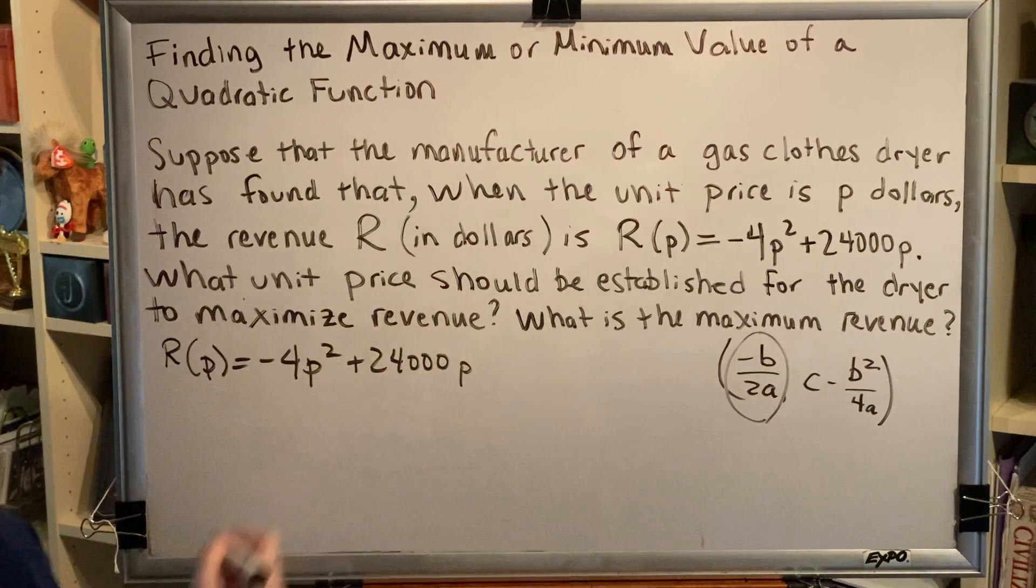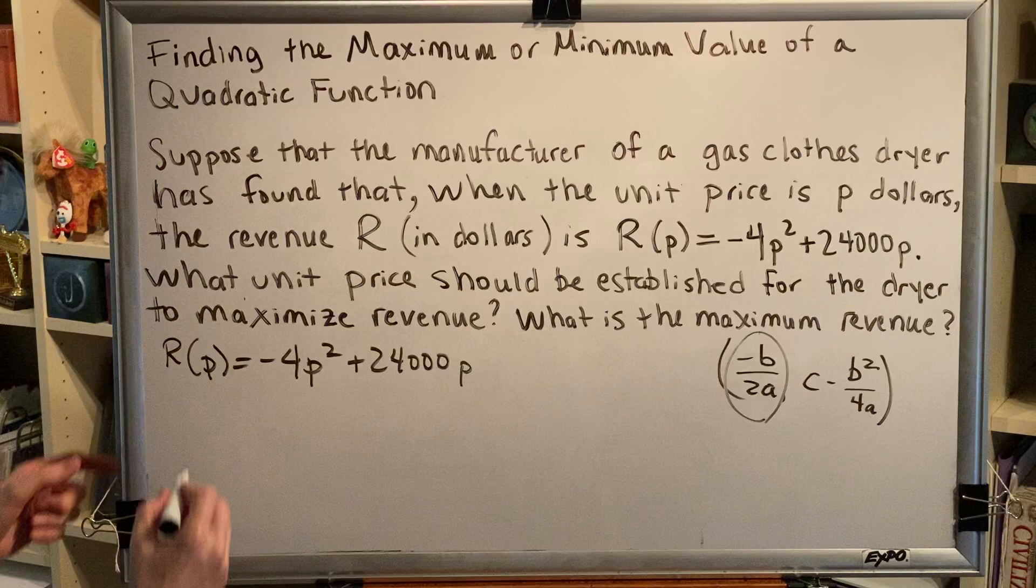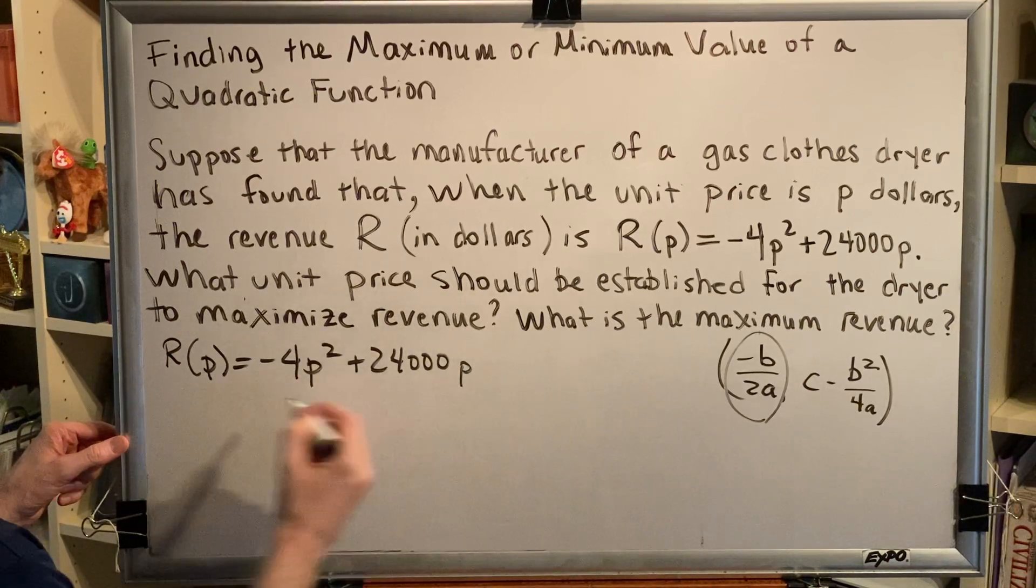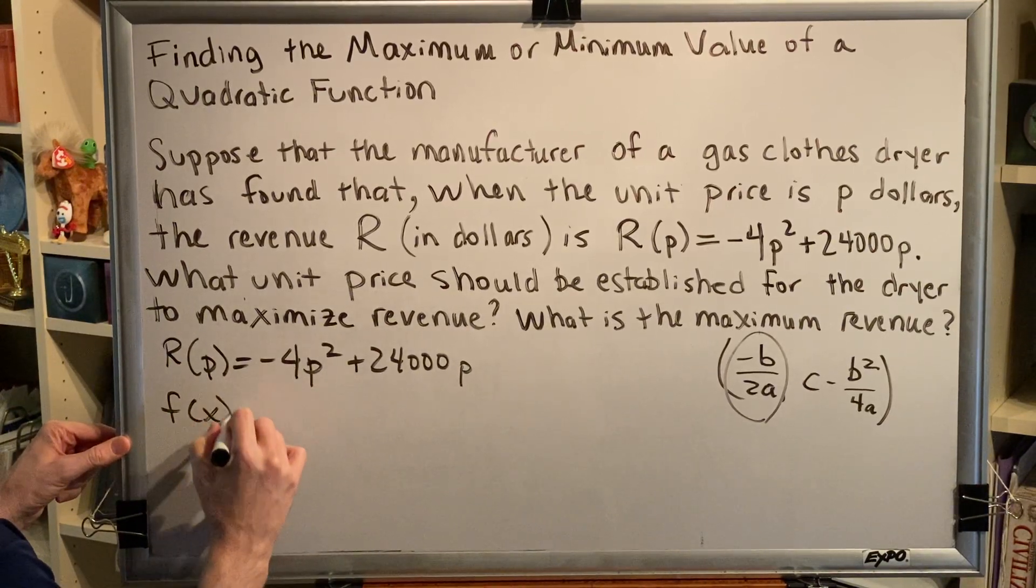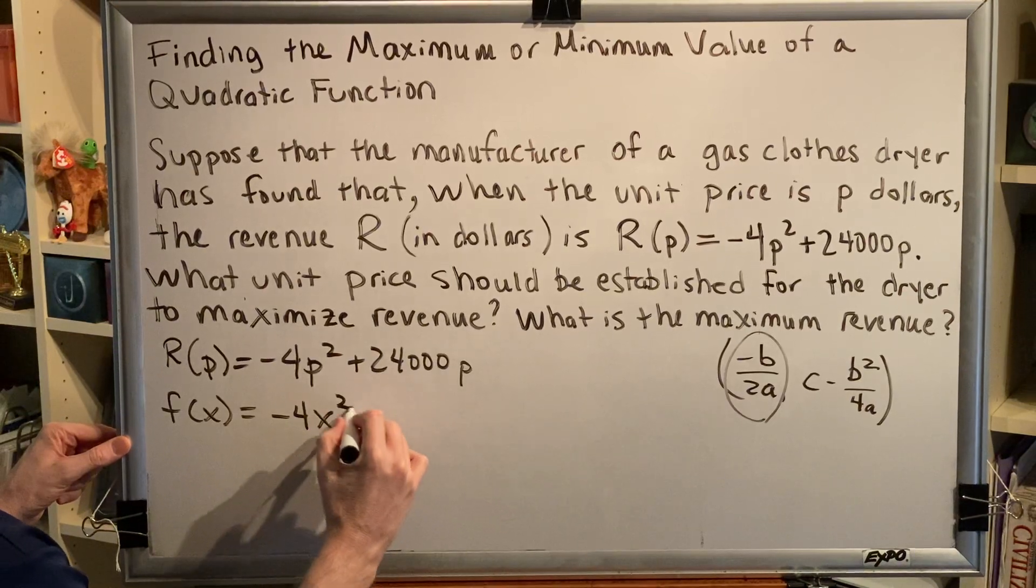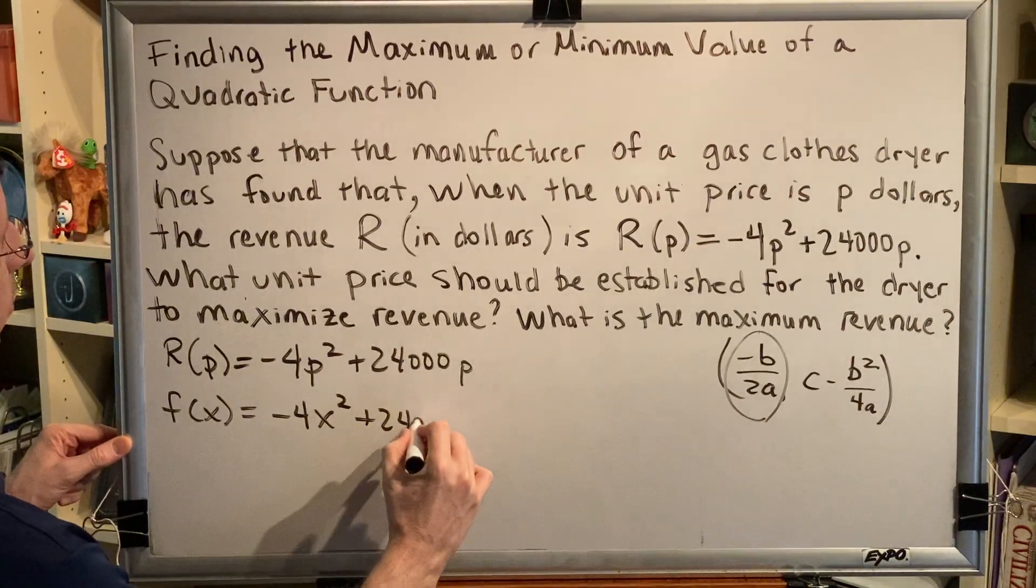This is a real world problem and that's why we're using letters other than x and y. But if you don't like the fact that there's r's and p's, you can rewrite it: f of x is equal to negative 4x squared plus 24,000x.